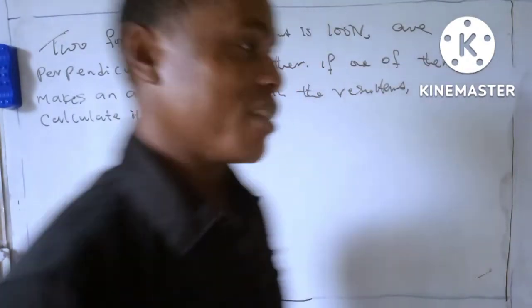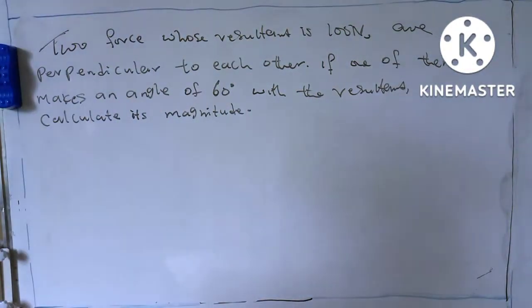Hi guys, welcome back to my channel. In today's video, we'll calculate this equation under physics, under scalar and vector quantity. Two forces whose resultant is 100 Newton are perpendicular to each other. If one of them makes an angle of 60 degrees with the resultant, calculate its magnitude.